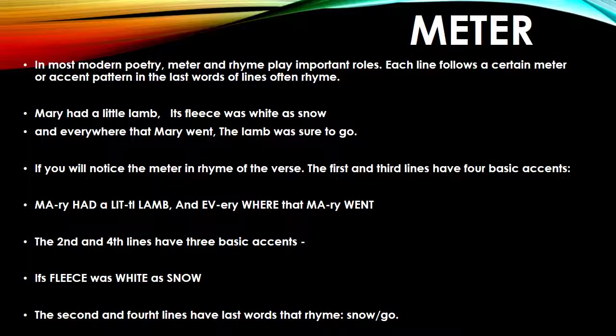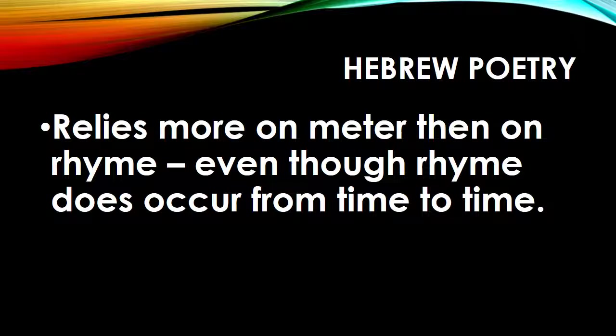If you notice the meter and rhyme of this verse, the first and third lines have four basic accents — 'Mary had a little lamb' and 'everywhere that Mary went' — while the second and fourth lines have three basic accents. The second and fourth lines also have last words that rhyme: 'snow' and 'go.' However, Hebrew poetry relies more on meter than on rhyme, even though rhyme does occur at different times and in different poems.